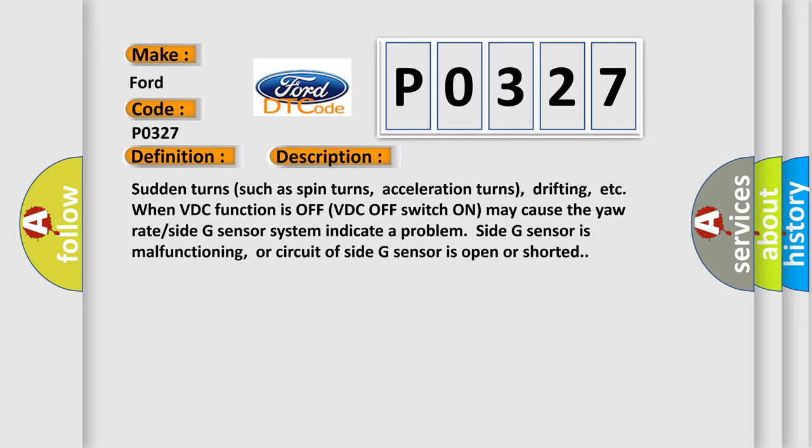Sudden turns such as spin turns, acceleration turns, drifting, etc., when VDC function is off (VDC off switch on) may cause the yaw rate side G sensor system to indicate a problem. Side G sensor is malfunctioning, or circuit of side G sensor is open or shorted.